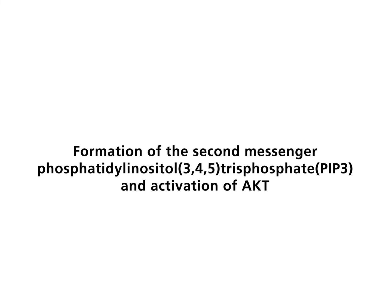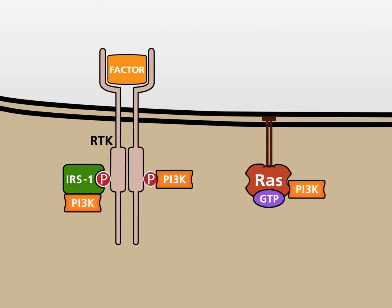Formation of the second messenger phosphatidylinositol 3,4,5-trisphosphate, PIP3, and activation of ACT. At the second level of the pathway, the second messenger phosphatidylinositol 3,4,5-trisphosphate, or PIP3, is formed. This leads to the activation of the serine-threonine kinase ACT.